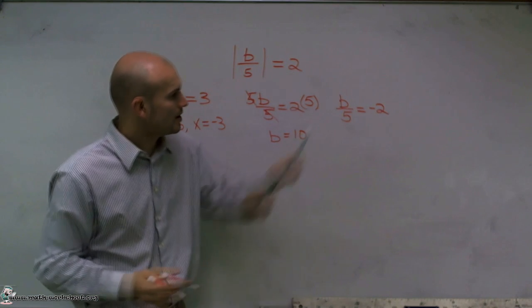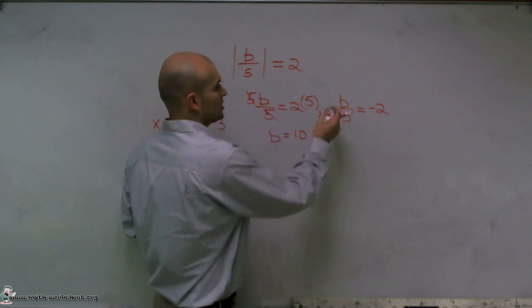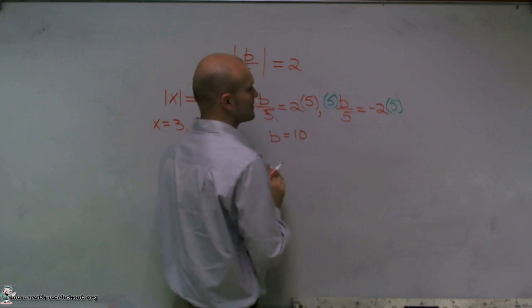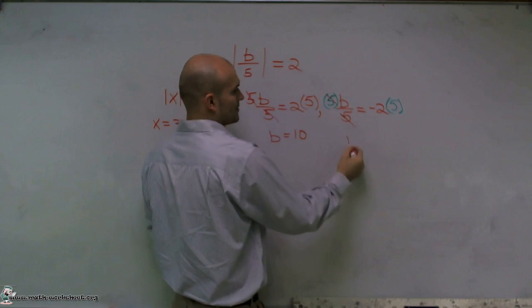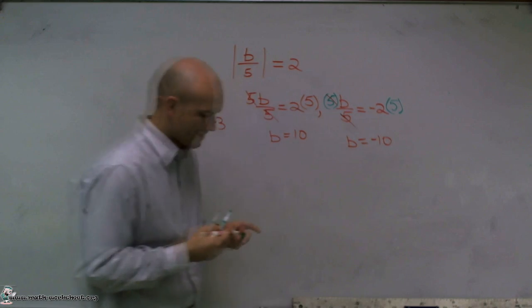For the other part, I'm going to use the same operations. I need to multiply by 5 again. So I'll multiply by 5 on the right and the left side. Therefore, these cancel out and I'm left with b equals negative 10.